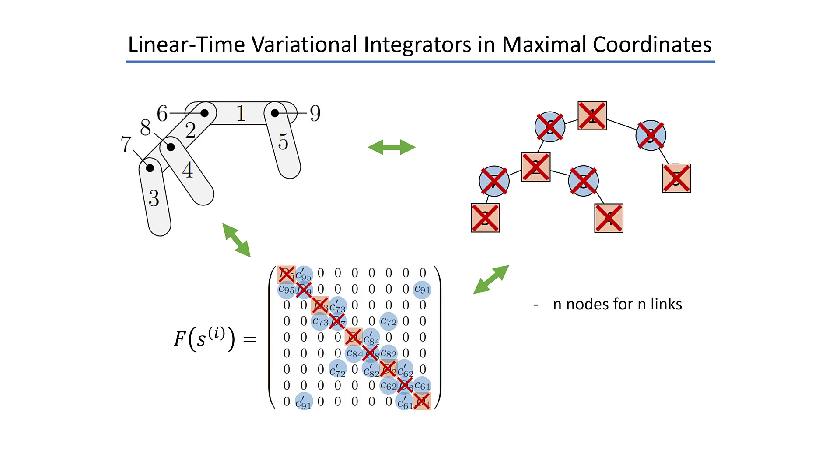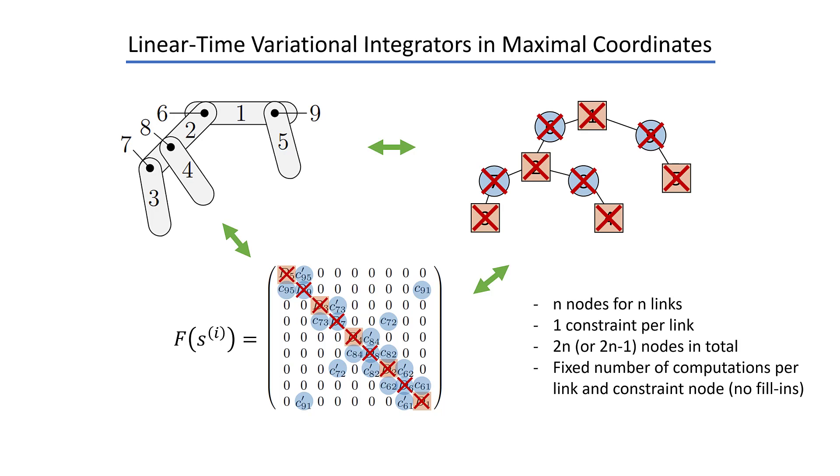To be more specific, we have n nodes for n links, and we also just have one constraint per link, at least for a mechanism without closed kinematic loops. Then in total we have two n nodes, or 2n minus one nodes, for floating-base systems. And since the structure of the matrix does not change, we have a fixed number of computations per node, and so in total we have a complexity of O(n), which means the algorithm scales linearly with the number of links in the system.